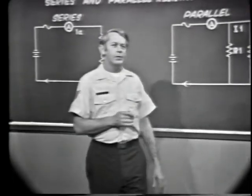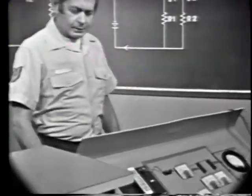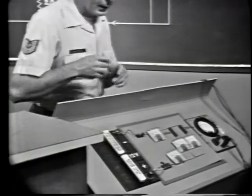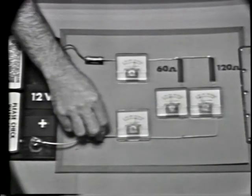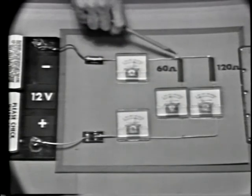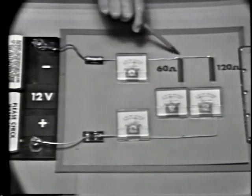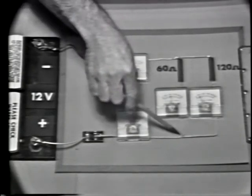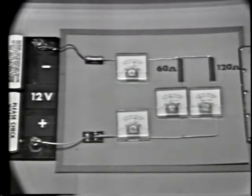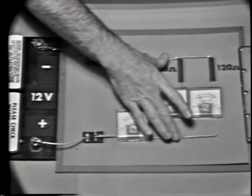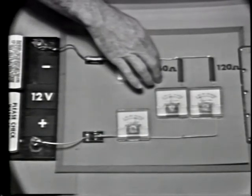Next, let's go over the characteristics of a parallel circuit. We've changed trainers so that we've added a parallel circuit here. This is a parallel circuit because the components are connected such that there's more than one path for current. Total current will flow from the battery and divide at this point — some through this branch, some through this branch. We should also notice that each branch is connected directly across the power source, so each branch voltage is equal to the applied voltage.